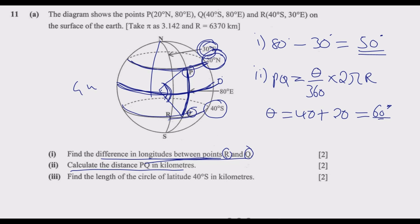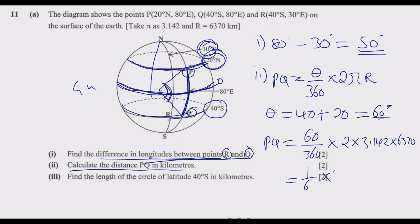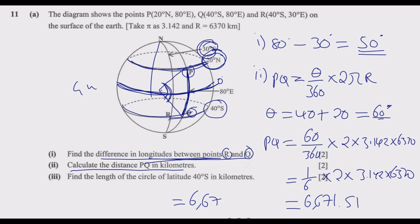Once we have 60 degrees, the calculation becomes easier. PQ equals 60 over 360, multiplied by 2 multiplied by 3.142, multiplied by 6370. Simplifying: 1 over 6, times 2, times 3.142, times 6370. This gives us 6671.51 kilometers. Rounded to 3 significant figures, the distance PQ is approximately 6670 kilometers.